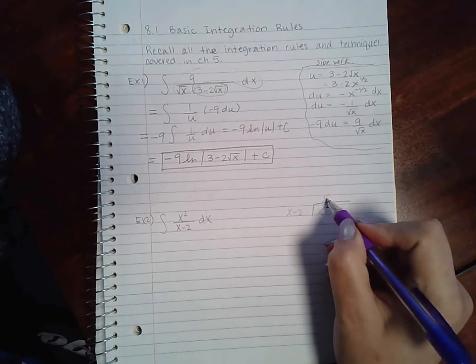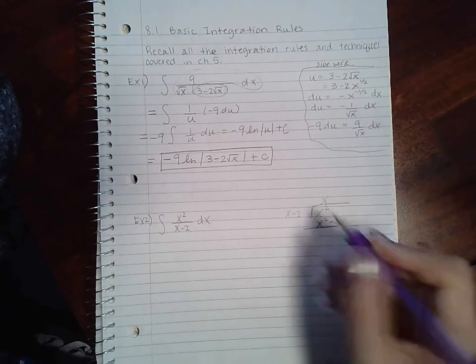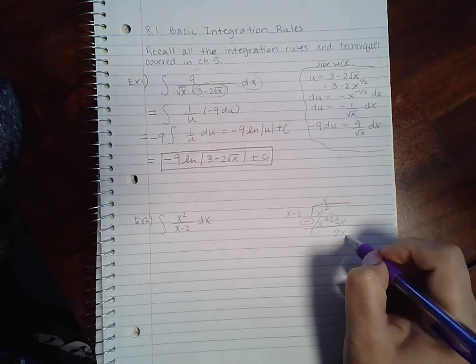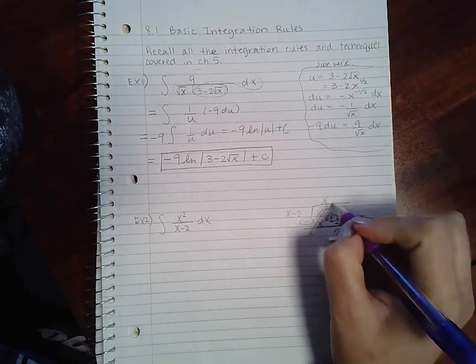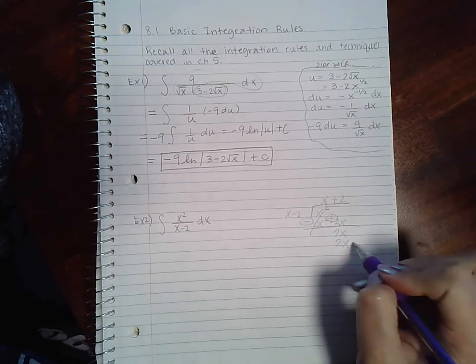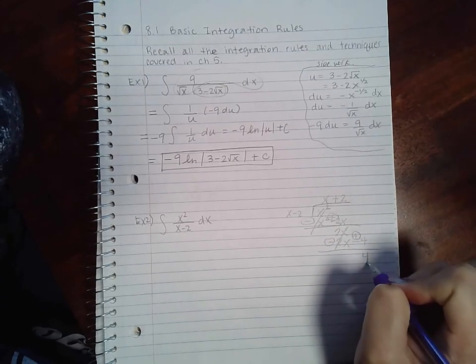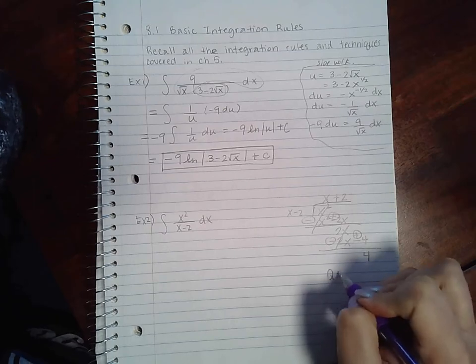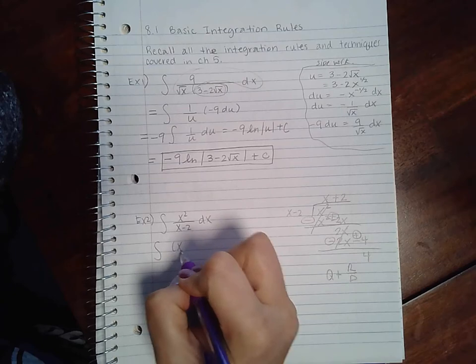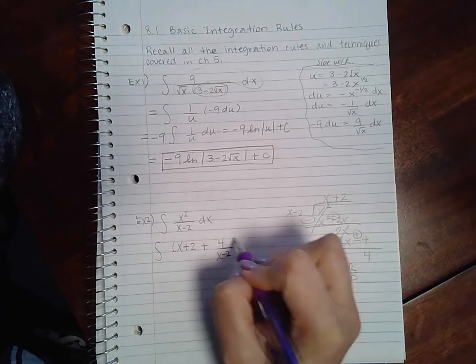So x times x is x squared, x times negative 2 is negative 2x. And then if I subtract, this will turn into positive, those cancel, I will get 2x. x times positive 2 is 2x, so 2x, 2 times negative 2 is negative 4. If I change the signs, those will cancel and I'll get 4. So this will be converted into the quotient plus the remainder over the divisor: x plus 2 plus my remainder over my divisor.